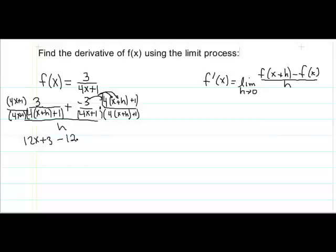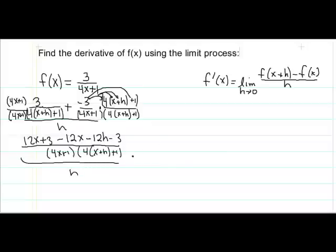So I get minus 12x and negative 3 times 4 is negative 12 times h so I get negative 12h. And then I still have to distribute this negative 3 times that 1 so we get minus 3. That is over our common denominator. And that whole thing is over h. On the top now we can combine like terms.